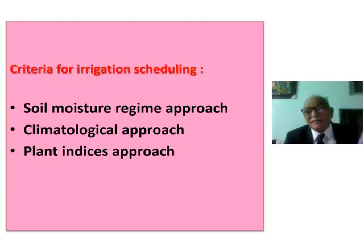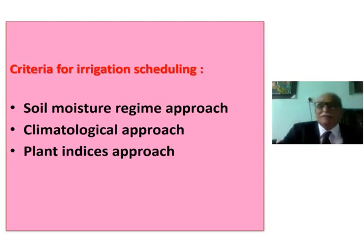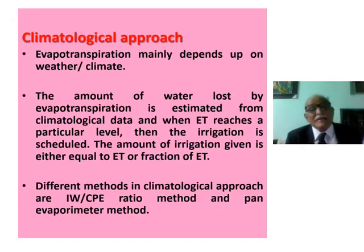What are the criteria for irrigation scheduling? There are three approaches: the soil moisture resume approach, the climatological approach, and the plant indexes approach. We will focus on the climatological approach and its methods.